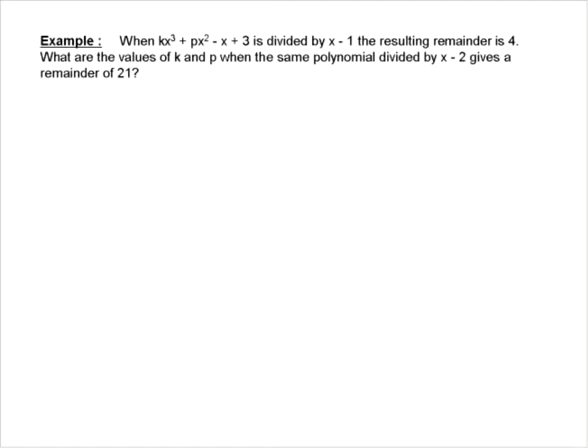Now, a lot of information in this question. So what we need to do is first apply the remainder theorem. So we're going to look at the remainder theorem when we're doing this first division, the polynomial divided by x minus 1. So that tells us that we're going to put an x value of 1.